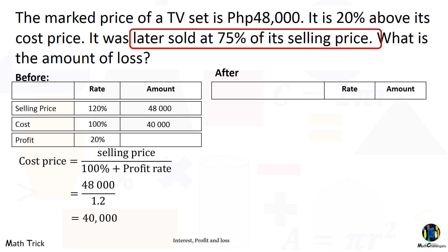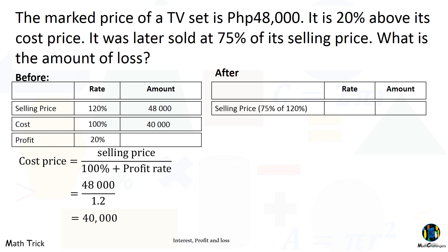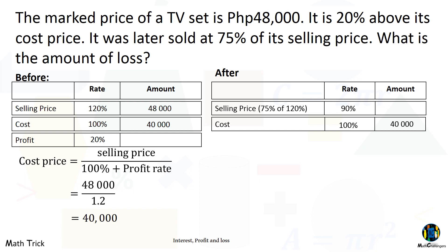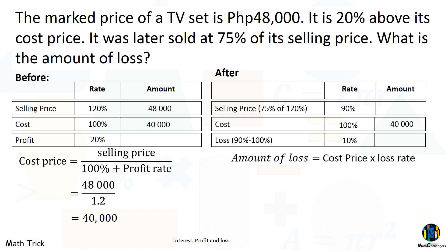Later it was sold at 75% of its selling price. The new selling price is 75% of the original selling price, so it became 75% of 120%, which is 90% of the cost. Knowing the cost is always 100% and the cost amount is 40,000 pesos, the rate of loss is 90% minus 100% — a loss of 10%. To compute the loss: 40,000 times 10% is 4,000. The amount of loss is 4,000 pesos.